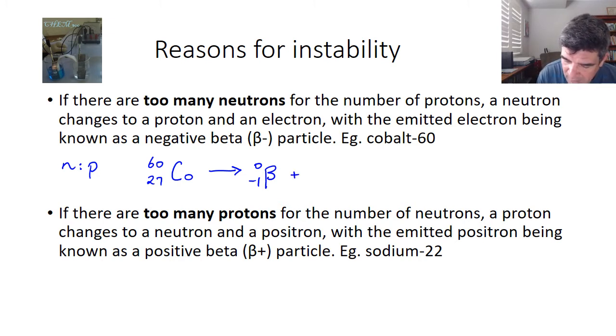Then we just need to make sure that we conserve our numbers. So on the top, there's a 0 here, which means this must remain as a 60, 60 plus 0 is 60. On the bottom, we've got a minus 1, so we've got to have 28. It'll go up one number, because 28 minus 1 is 27.